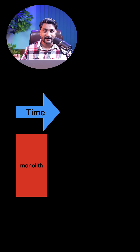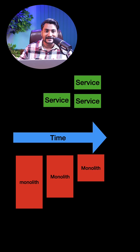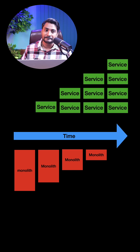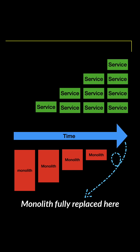The strangler fig squeezes the minerals, water, and nutrients from the host tree, resulting in the host tree dying — which is why some people call it a killer tree. The same concept applies to our microservices architecture: the new services we build around the monolith eventually result in the monolith being completely replaced. That's why I call the Strangler Facade a killer design pattern for microservices. Let me know in the comments what pattern you want me to discuss next.